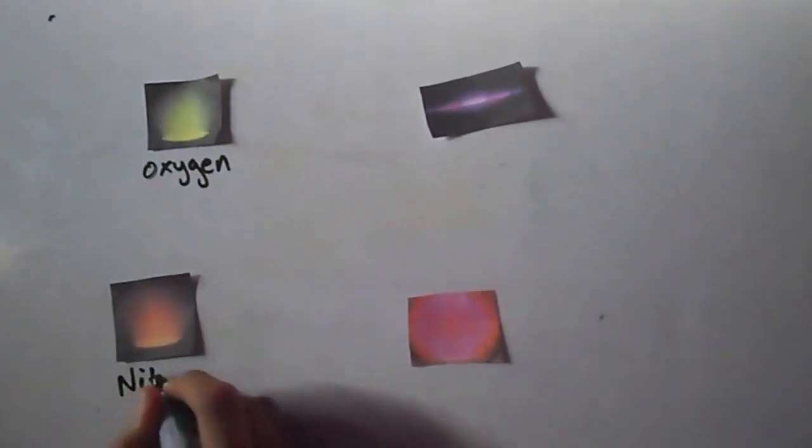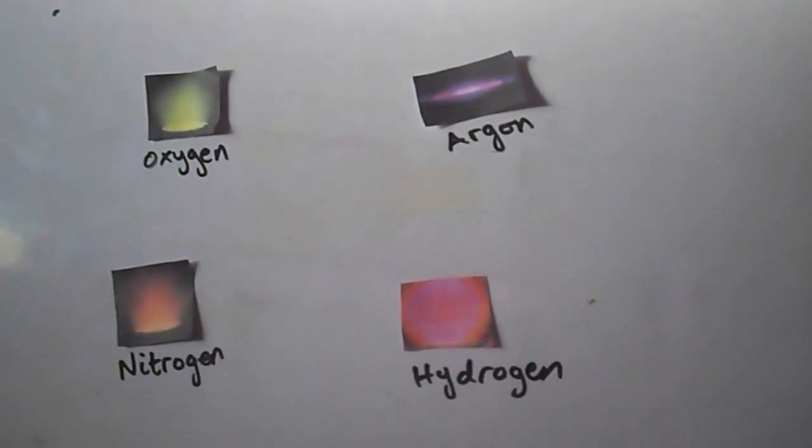For example, oxygen is pale yellow, nitrogen goes from red to yellow, hydrogen is pink, and argon is dark violet.